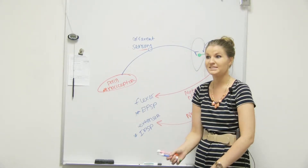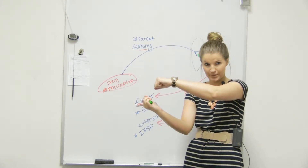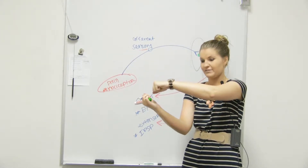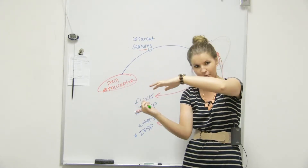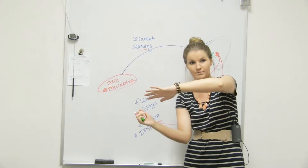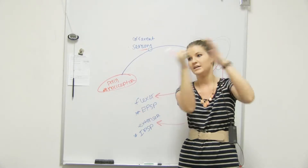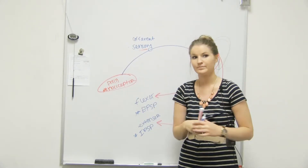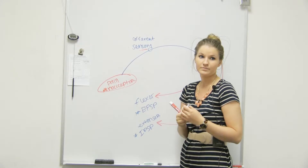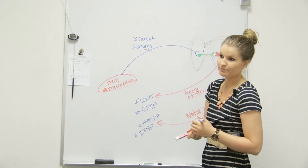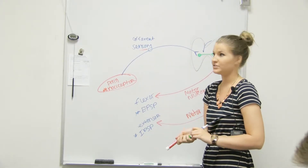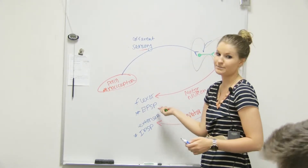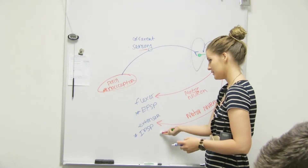So I need to flex my hamstring — my flexor — and I need to relax my extensor so I'm able to pull my foot off. Because if both of them are flexing, there's no movement. If I relax the extensor, then my flexor can bring me off. That's withdrawal with reciprocal innervation — one pathway is an EPSP and one is an IPSP.